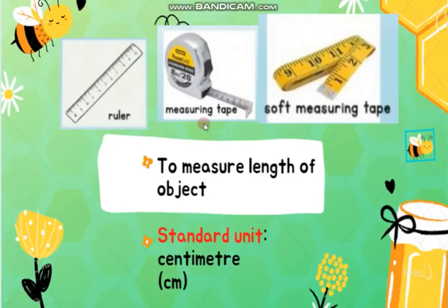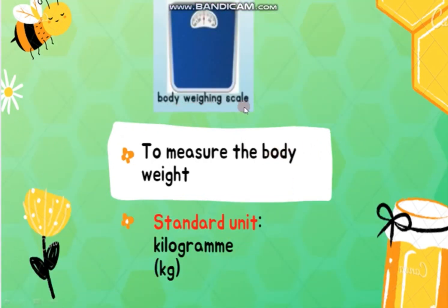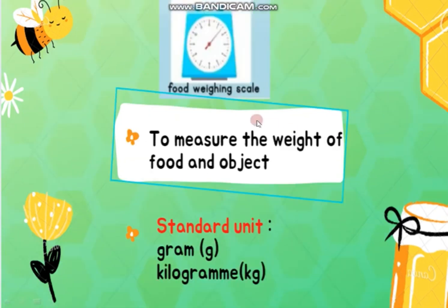Ruler, measuring tape, and soft measuring tape are used to measure the length of objects. The standard unit is cm. Body weighing scale is used to measure body weight — the standard unit is kilogram (kg). Foot weighing scale is used to measure the weight of objects. The standard units are gram (g) and kilogram (kg).